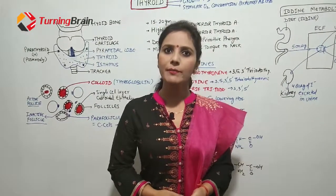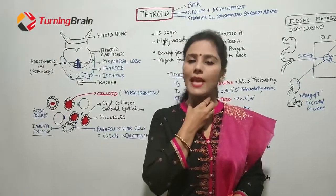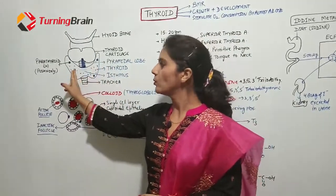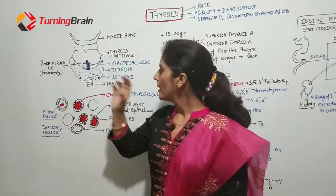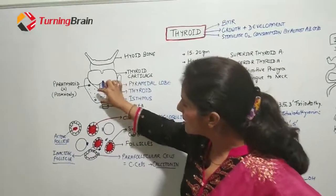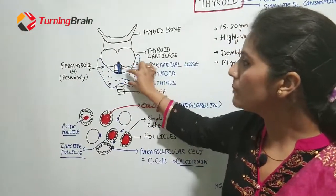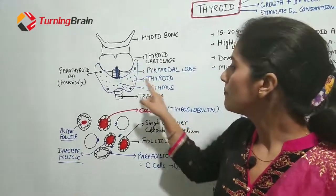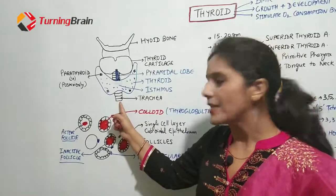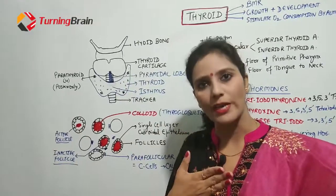Hello everyone. In this video we will discuss the thyroid gland. The thyroid gland is a very important gland located in our neck. It is made up of two lobes — one on the right side and another on the left side — joined by an isthmus. Behind it is the trachea, so it is situated anterior to the trachea.